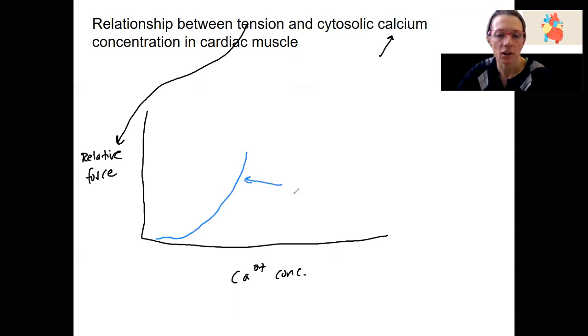This might be kind of our normal contraction, like a typical heartbeat. But this is able to go up even higher. If we increase calcium concentration more, force can increase even more until we are going to max out at some point. So this might be the peak at maximal contraction.